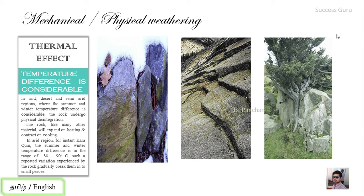The thermal effect — temperature difference is considerable, varying from day to night. Heat causes expansion and cooling causes contraction. For example, in the area of Karakum, the temperature in summer is 70 degrees Celsius, whereas in winter it is minus 10 degrees Celsius — so the difference is 80 to 90 degrees Celsius. If the rock is heated and then cooled, it undergoes expansion and contraction. This is the thermal effect.